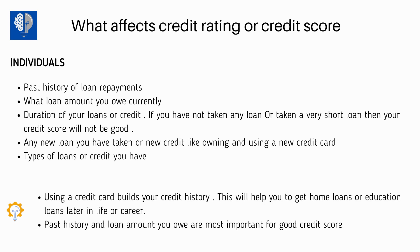Now we will see what affects the credit rating. For individuals, there are five main parameters. The first is the past history of loan repayment — the company will see whether you have paid your loan repayments on time. The second point is what loan amount you currently owe. For example, if I bought a car one year back for seven lakhs borrowed from the bank, the bank will see that this person owes an amount of seven lakhs.